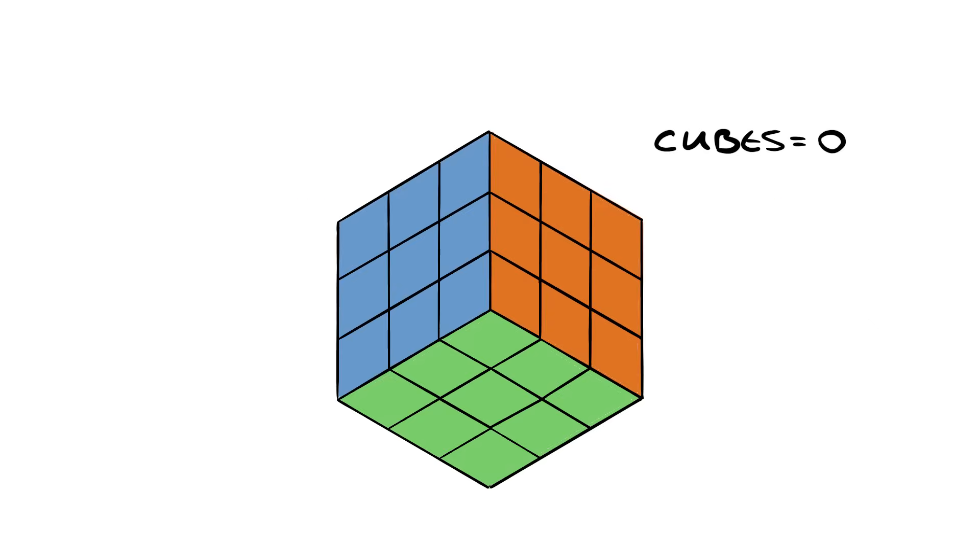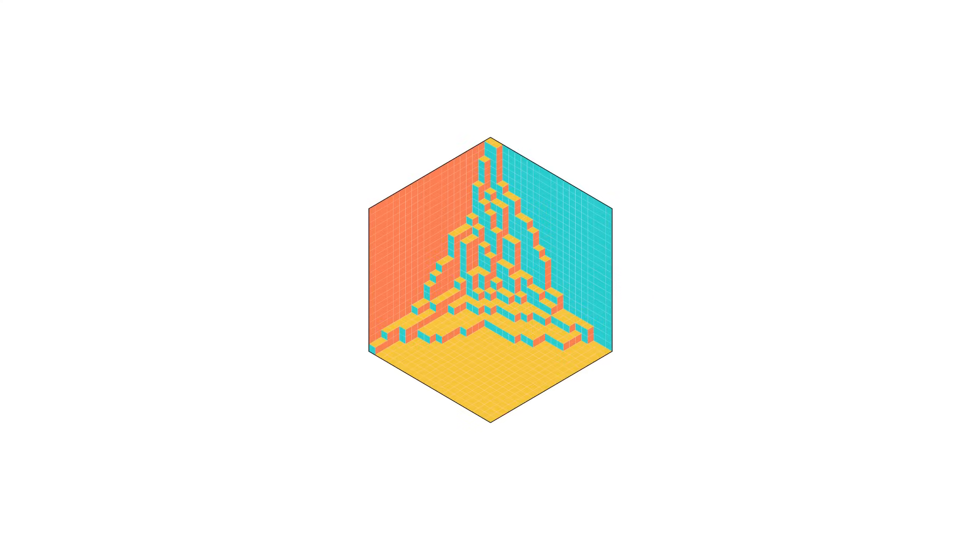For example, let's make it so the probability of picking a tiling is higher when the total number of cubes is lower. This is what a sample might look like.